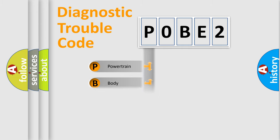Powertrain, Body, Chassis, Network. This distribution is defined in the first character code.